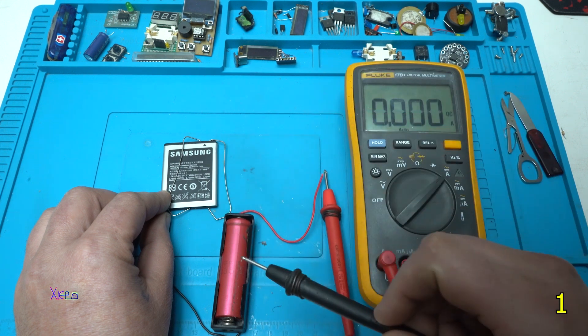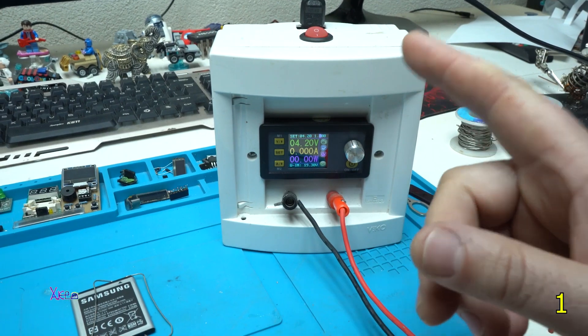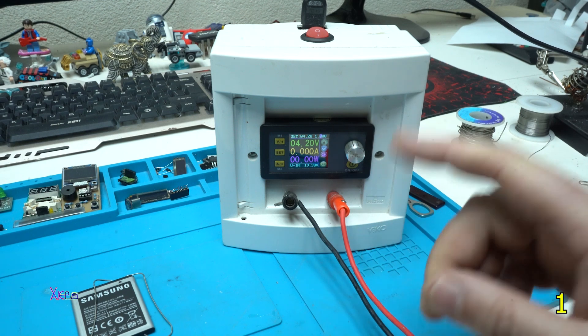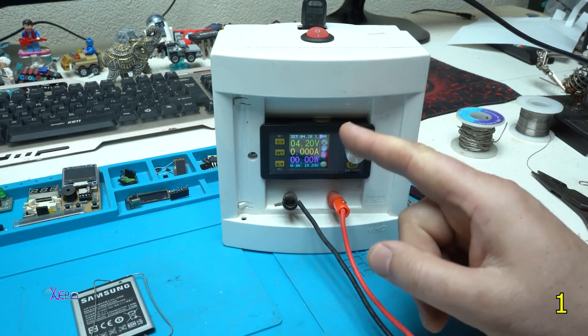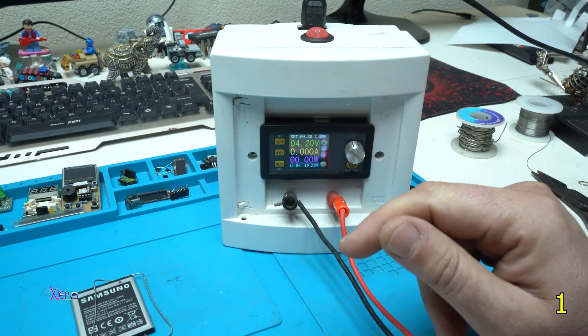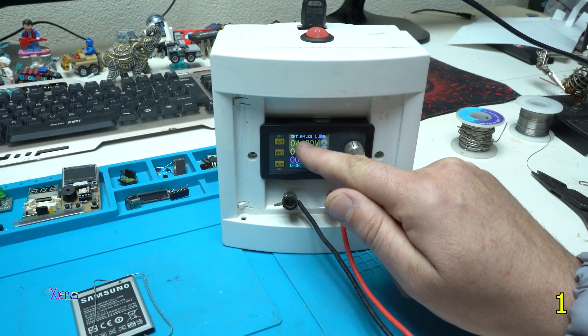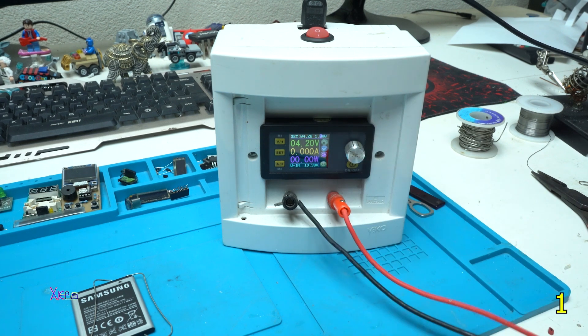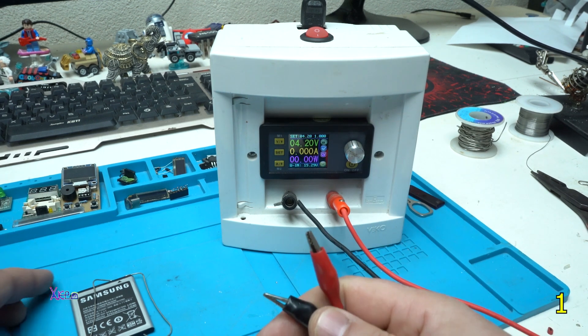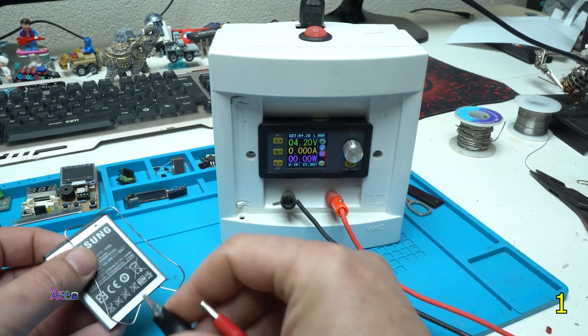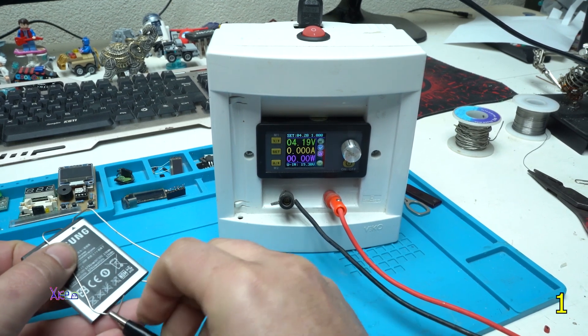But it's much better and safe when you use power supply with adjusted current. I set my current on one amp and the volts are set on 4.2 volts. Now I'm gonna hook up the alligator clips on the negative...